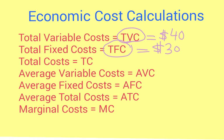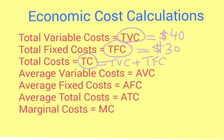Total costs, abbreviated TC, equal the sum of total variable cost and total fixed costs. So total cost is simply TVC plus TFC. In our numerical example, that equals $70.